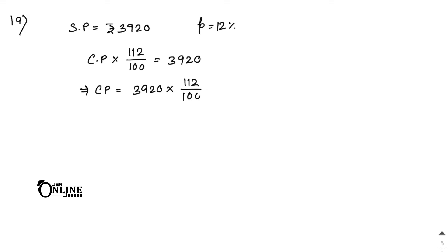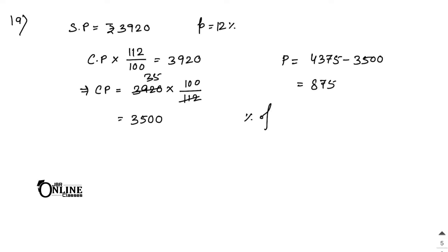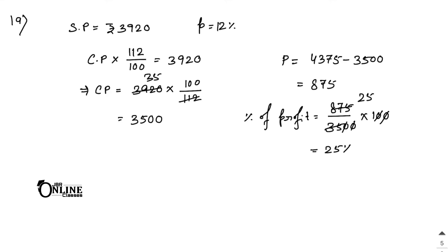CP equals 3,920 into 100 by 112. Dividing 3,920 by 112 gives 35, so CP equals 3,500. If sold for 4,375, profit amount equals 4,375 minus 3,500 equals 875. Percentage of profit equals 875 divided by 3,500 into 100 equals 25%. So 25% is your answer.